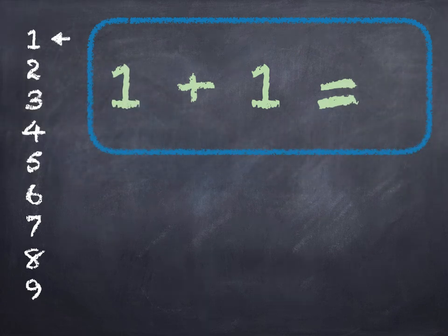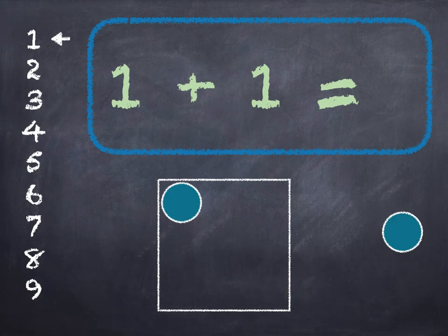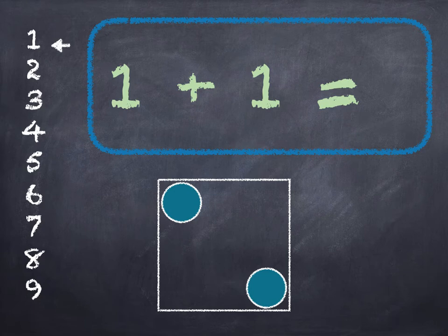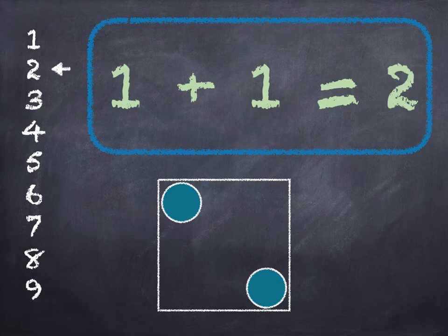1 plus 1. There's 1 in the box and we're adding 1 on. 1, 2. And if we check it on the number line we start at 1, we go down 1 and we get to 2. So 1 plus 1 is 2.